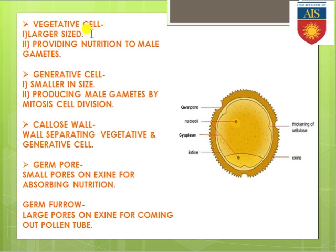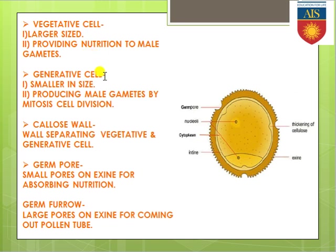The vegetative cell is a type of cell present in the cytoplasmic portion of the pollen grain. Compared to the generative cell, it is larger in size. This cell is present for providing nourishment to the male gametes — the generative cell will further divide into two male gametes, and those male gametes obtain their nourishment from the vegetative cell.